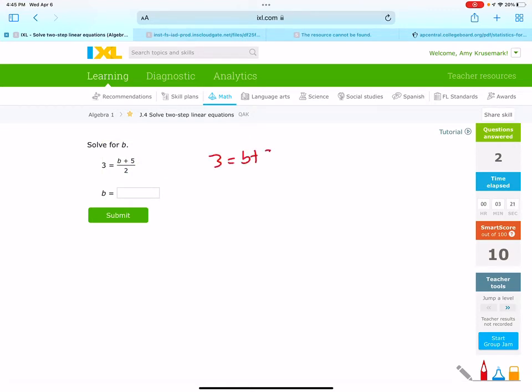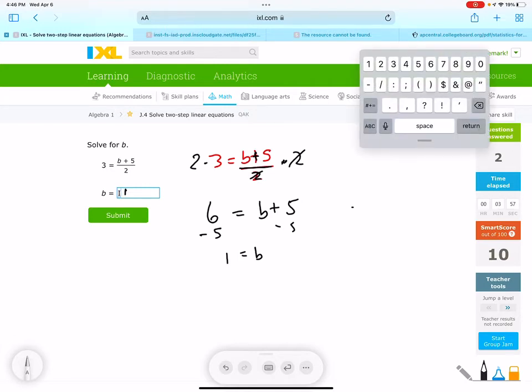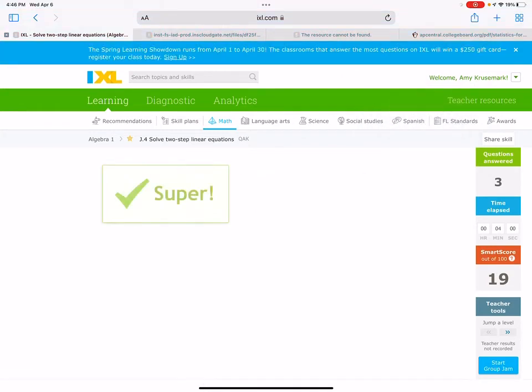Let's do another one. Three equals B plus five over two. So we see that B is being added to five, but it's also being divided by two. So we need to multiply by two on both sides. We get six. And that cancels. And we subtract five on both sides. And we get B is one. Beautiful.